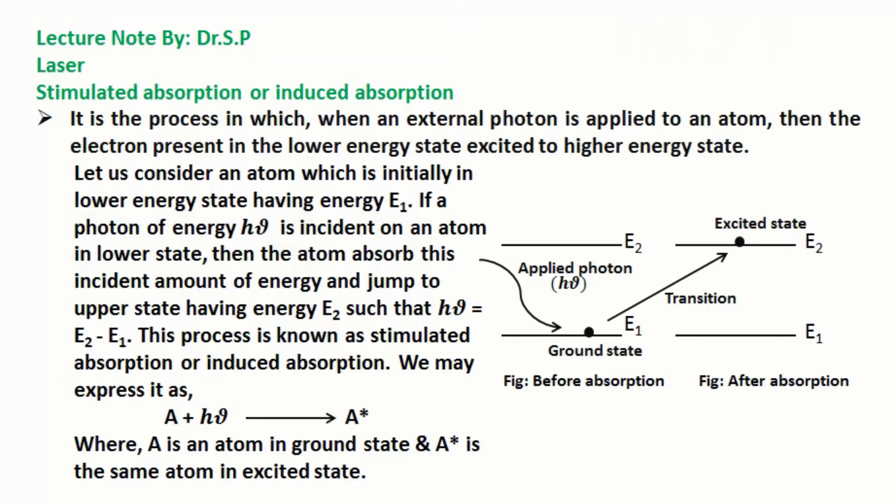If a photon of energy hν is incident on an atom in lower state, then the atom absorb this incident amount of energy and jump to upper state having energy E₂ such that hν = E₂ - E₁. This process is known as stimulated absorption or induced absorption. We may express it as A + hν → A*.